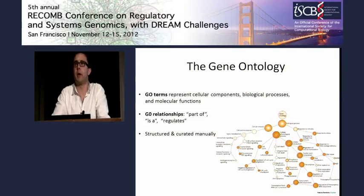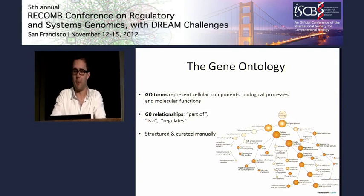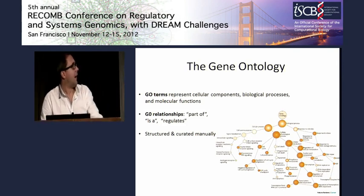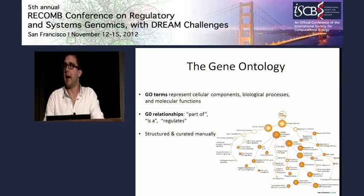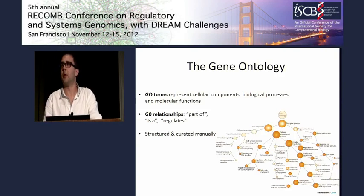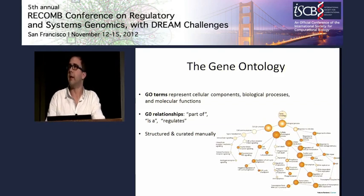Hierarchies in biology — we have definitely seen them around, and there are examples of hierarchical models in biology. Perhaps the best-known example is the gene ontology, in which nodes represent cellular components, biological processes, or molecular functions, depending on which particular ontology we're looking at. The edges in the ontology represent relationships between these components — part-of, or is-a, or regulating relationships between components, processes, or functions.